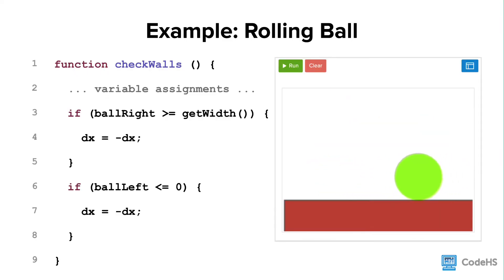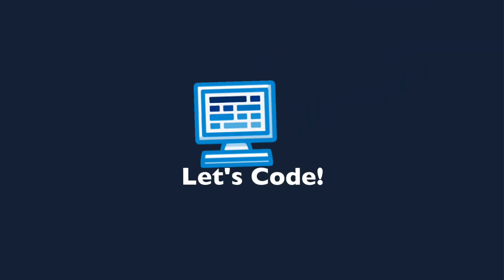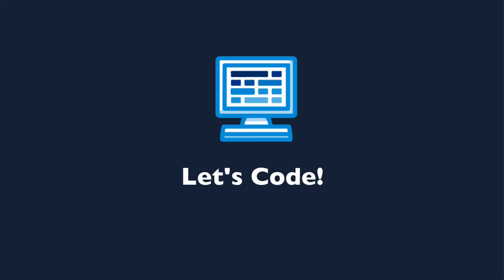And voila! We have code that, when nestled into a function, can check to see if a ball has collided with the left or right wall. And if so, it just reverses the motion of the ball. Let's take a look at this program in action in the editor.